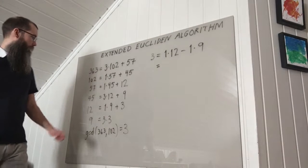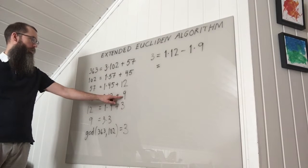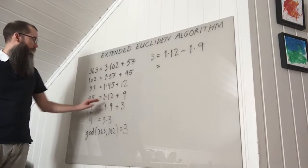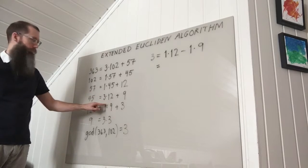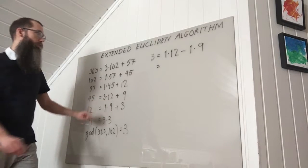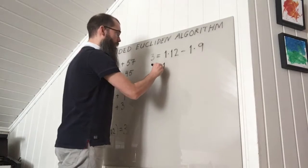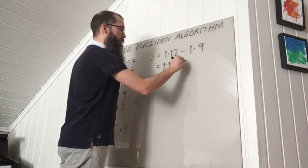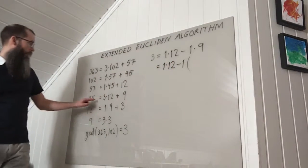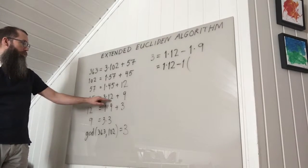And then I use this line to express 9 as 45 minus this term. So I keep this 1 times 12 but I replace 9 by 45 minus 3 times 12.